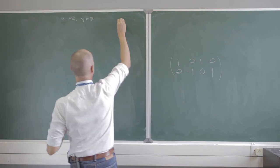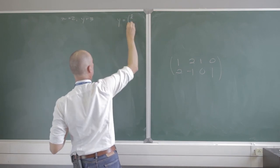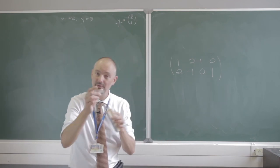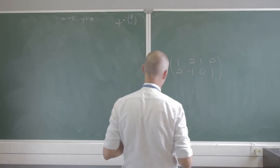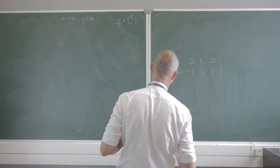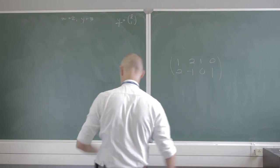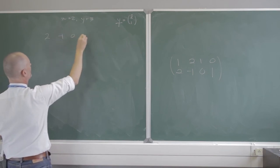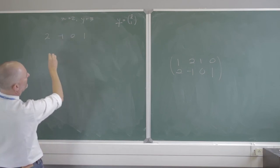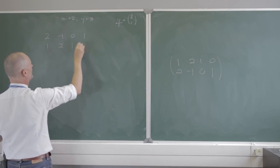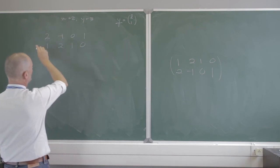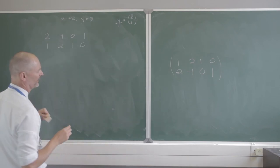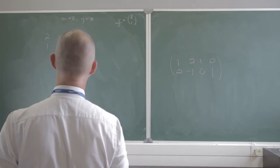Remember that y was the vector 8 and 1 — my matrix y on the right-hand side, but that has nothing to do with the y of x and y. First thing I'll do: swap the rows, giving 2, negative 1, 0, 1 and 1, 2, 1, 0.